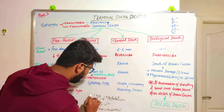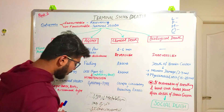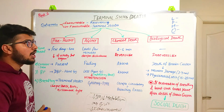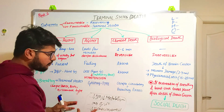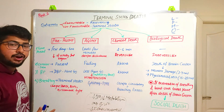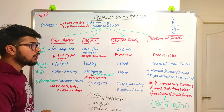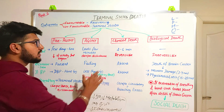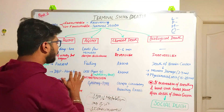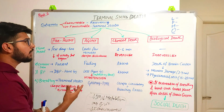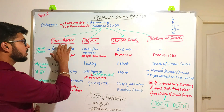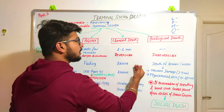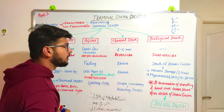These four factors occur during the terminal states. The terminal states are divided into four categories: pre-agony, agony, clinical death, and finally biological death.